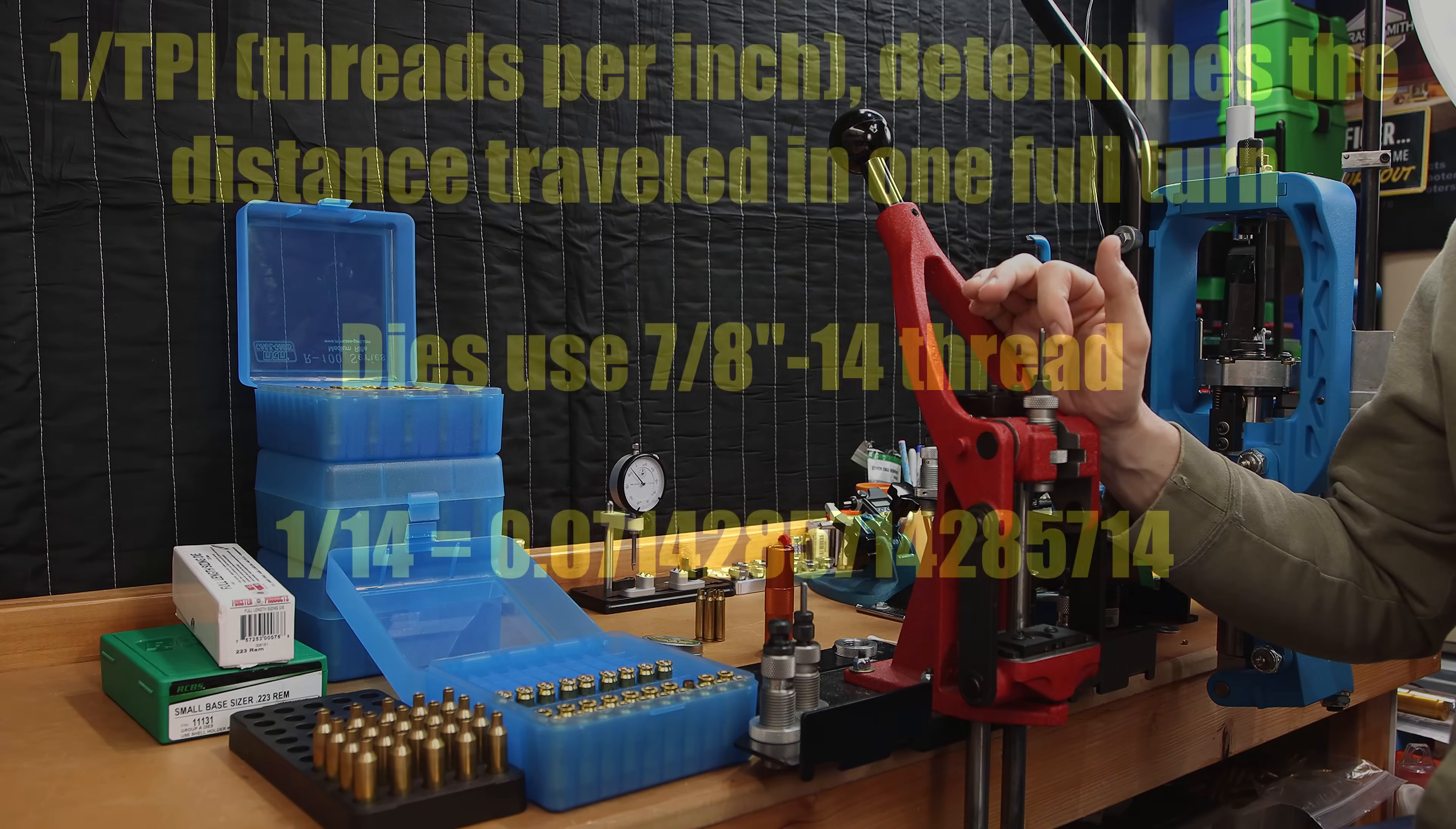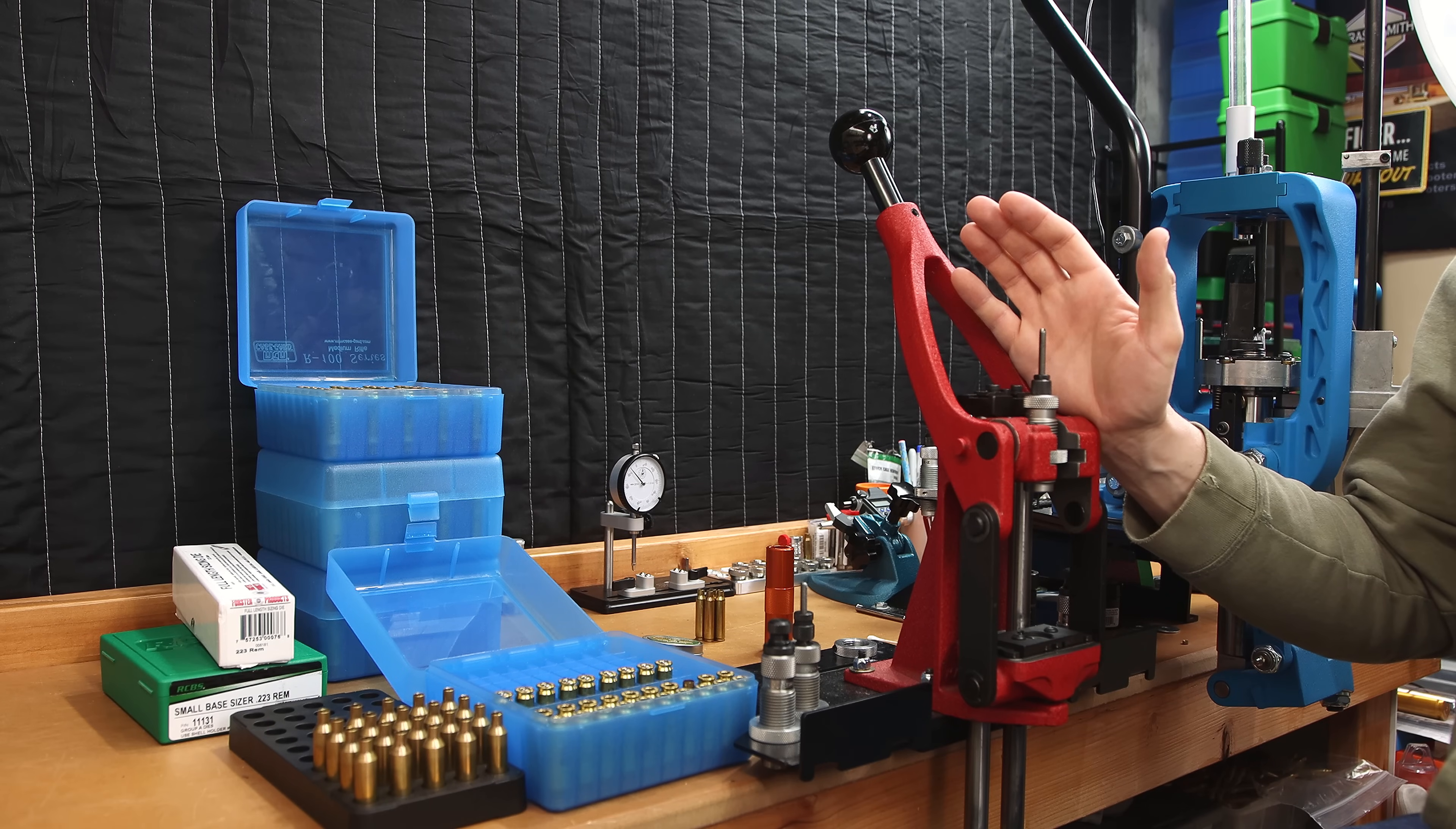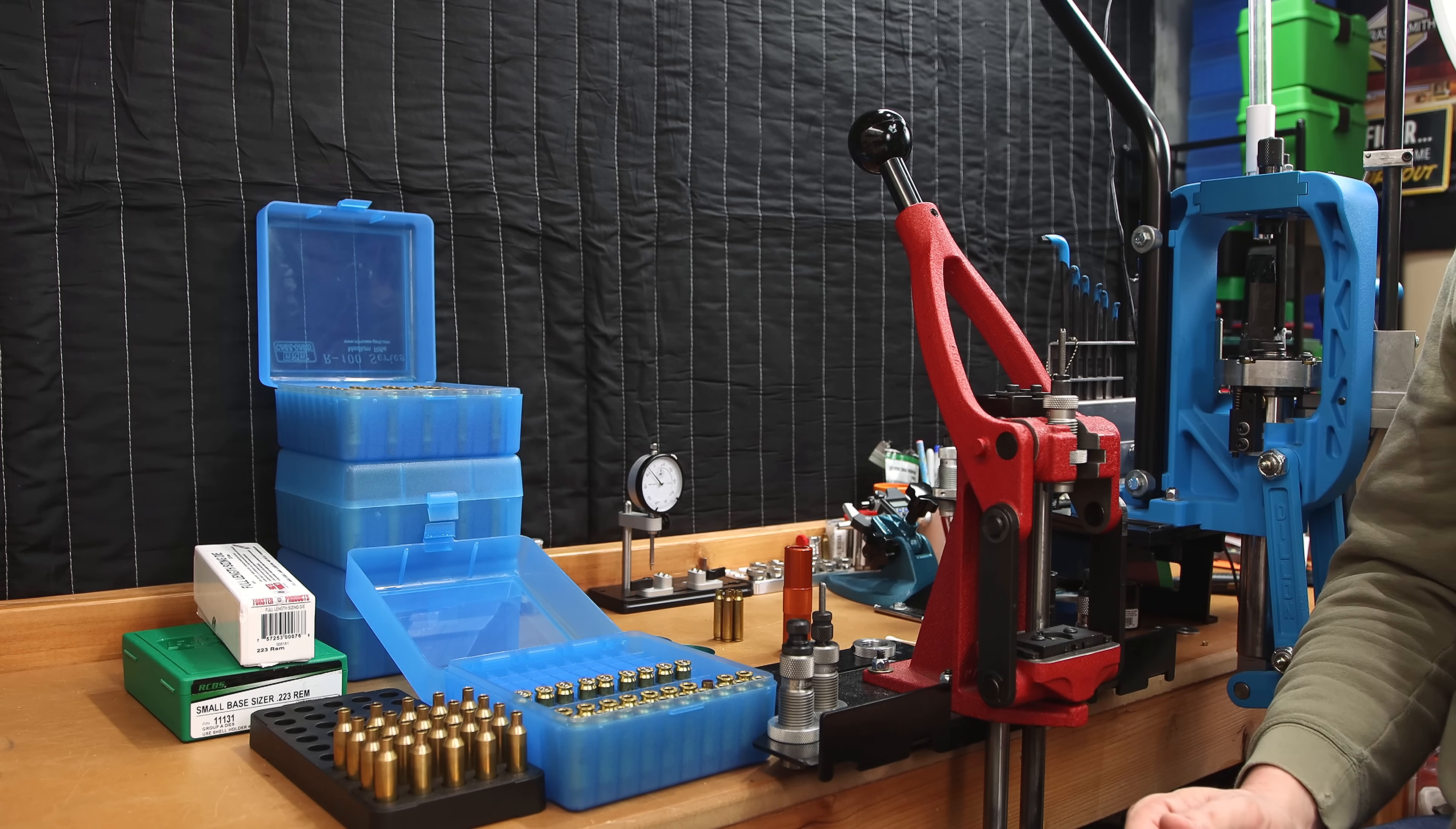One full rotation of your die should move your die down somewhere around 72 thousandths. That eighth to a quarter of a turn is somewhere around 9 to 18 thousandths, quite a significant distance when we're talking about sizing brass. In most cases, this will size it so your brass will fit.